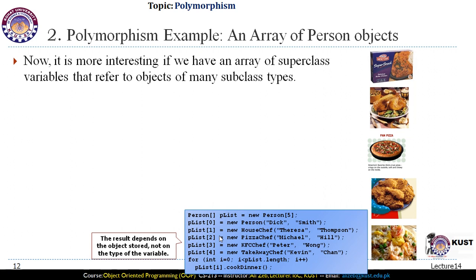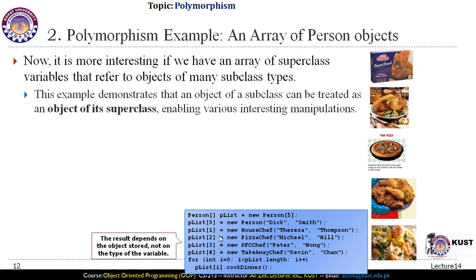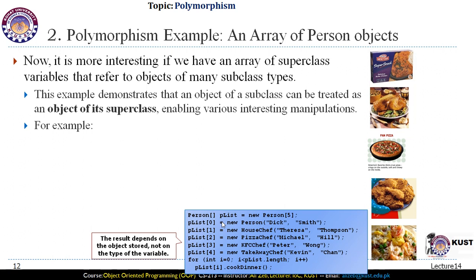We can create an array of Person objects and initialize objects of the subclasses using a reference to the superclass, because every object of a subclass is an object of the superclass. We can store subclass objects in an array of the superclass type. This demonstrates that a subclass object can be treated as a superclass object, but not vice versa — the reverse is not true.